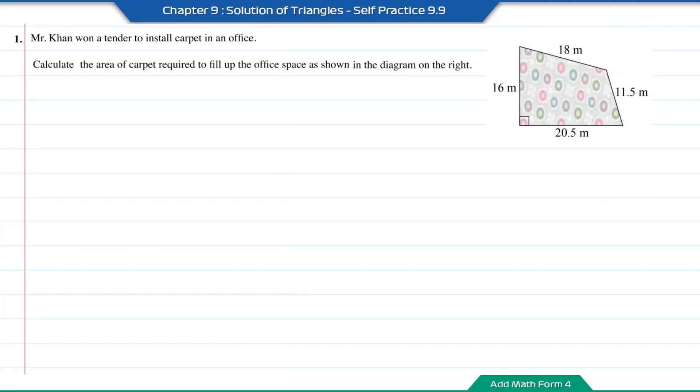Practice 9.9, question number 1. Mr. Han wants a tender to install carpet in an office. Calculate the area of carpet required to fill up the office space as shown in the diagram on the right.